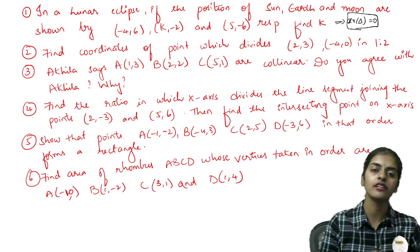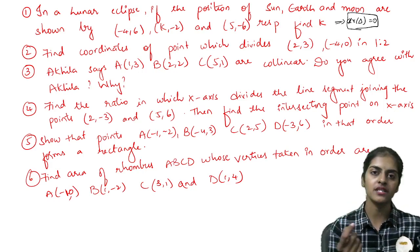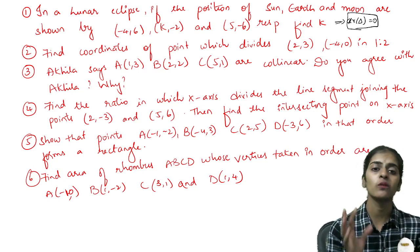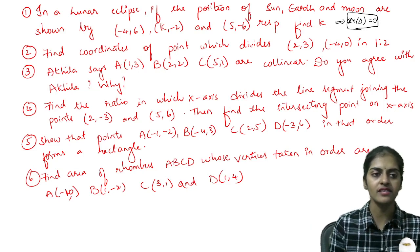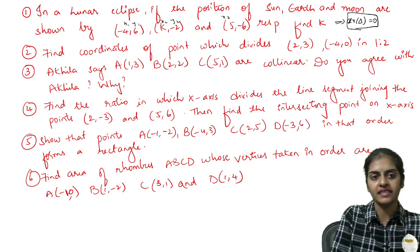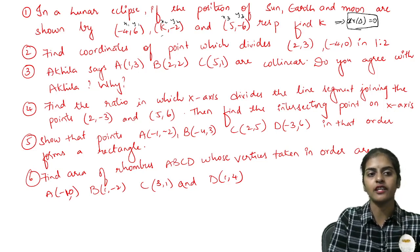Area of triangle is half mod x1 into y2 minus y3 plus x2 into y3 minus y1 plus x3 into y1 minus y2 equals to 0. Substitute all the values, take this as x1, y1, x2, y2, x3, y3 and substitute in the formula, you will get the value of k.